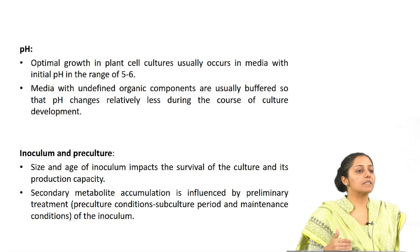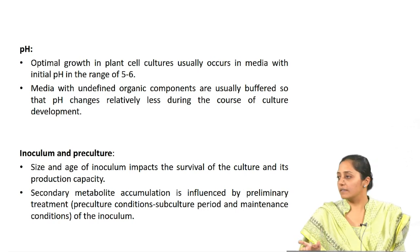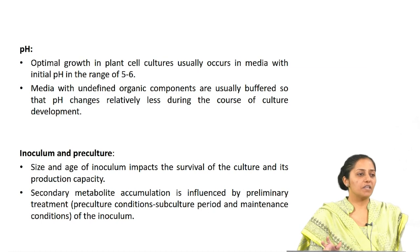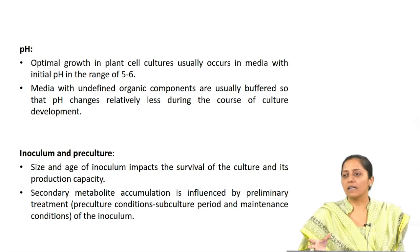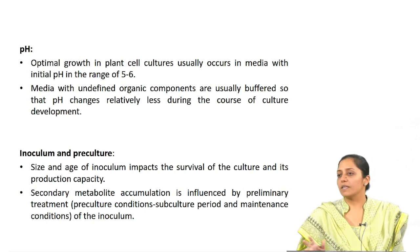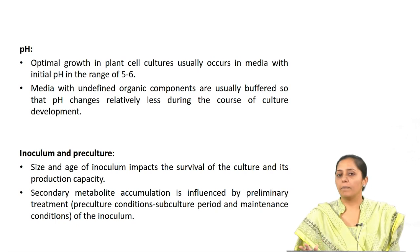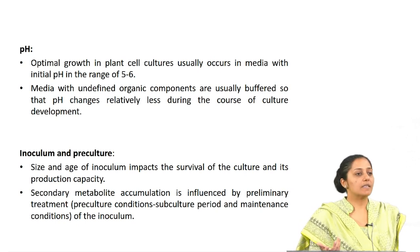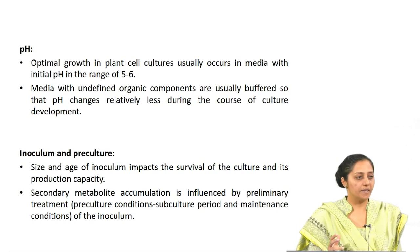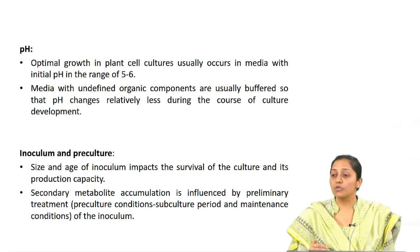pH — generally plant cells prefer a slightly acidic pH ranging between 5 to 6. Irrespective of species, one has to maintain pH between 5 to 6, as they are quite sensitive. Enzyme activity is crucially impacted by the surrounding pH of the medium.